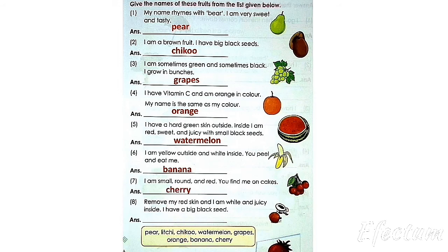Cherries are small round fruit. They have a seed in the middle. They taste slightly sour and are often used to flavor cakes and ice cream. Number 8: remove my red skin and I am white and juicy inside. I have a big black seed. Litchi has a red skin and after peeling it, there is a white juicy fruit inside.